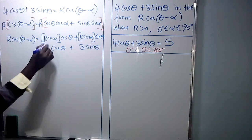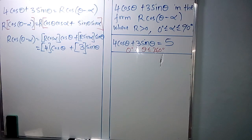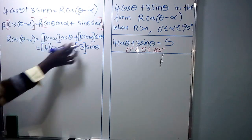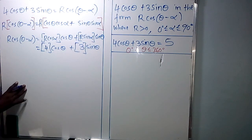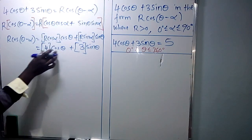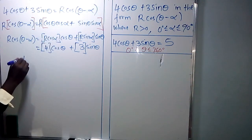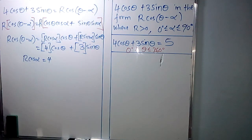That means we only compare the coefficients — the coefficient of cos theta on both sides must be the same, and the coefficients of sin theta must be the same. So it implies R cos alpha is the same as 4, because both are coefficients of cos theta.